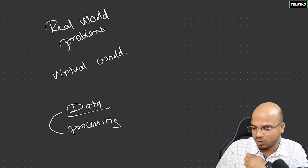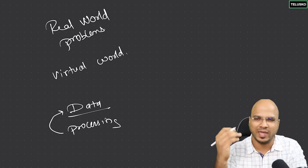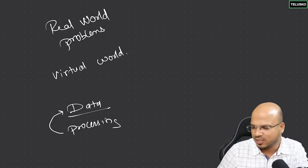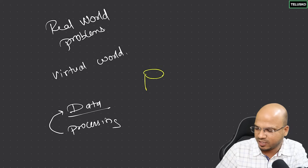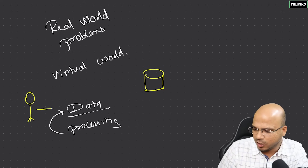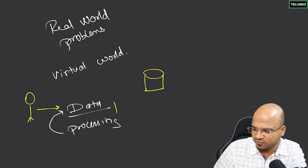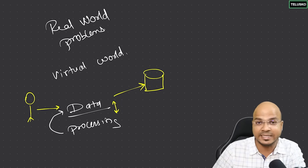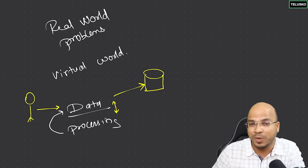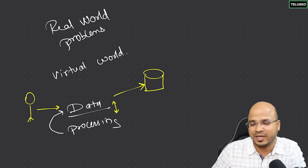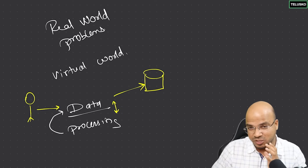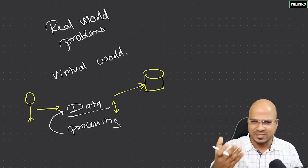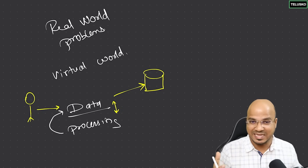When you build a project or application, you are doing processing on data. That data can come from a user. A user sends data, you apply processing on it, and at the end you might store it in a database. The database is a permanent or persistent storage. Even if you shut down your machine, the data stays there.